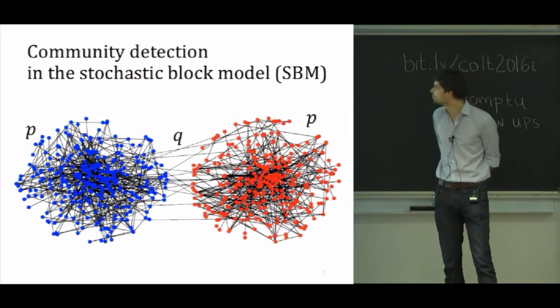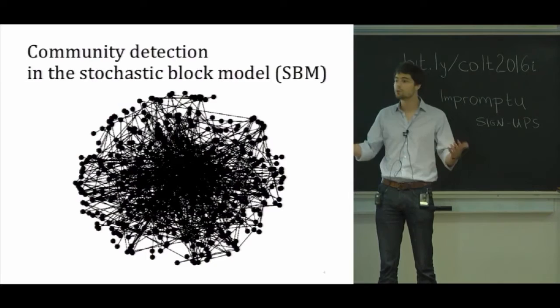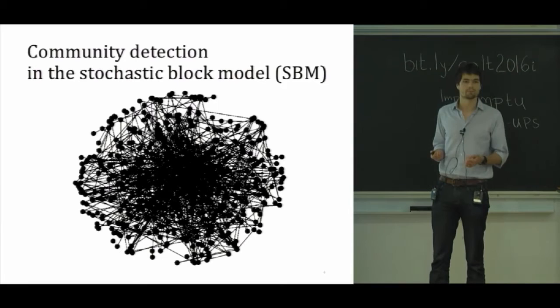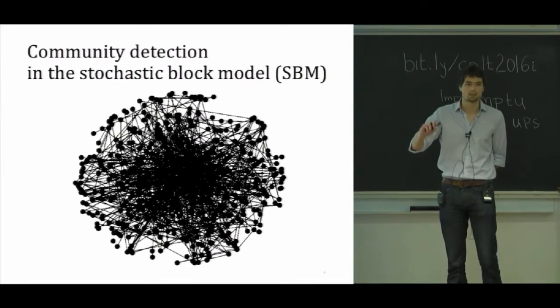One obvious statistical question to ask, given this model to generate random graphs, is simply generate the graph, mix up the nodes, remove the colors, and then the question is, given one realization of this random graph model, given one observation, can you recover the colors? And if that's not possible, can you say something non-trivial about the colors, something non-trivial about the partition that was hidden?